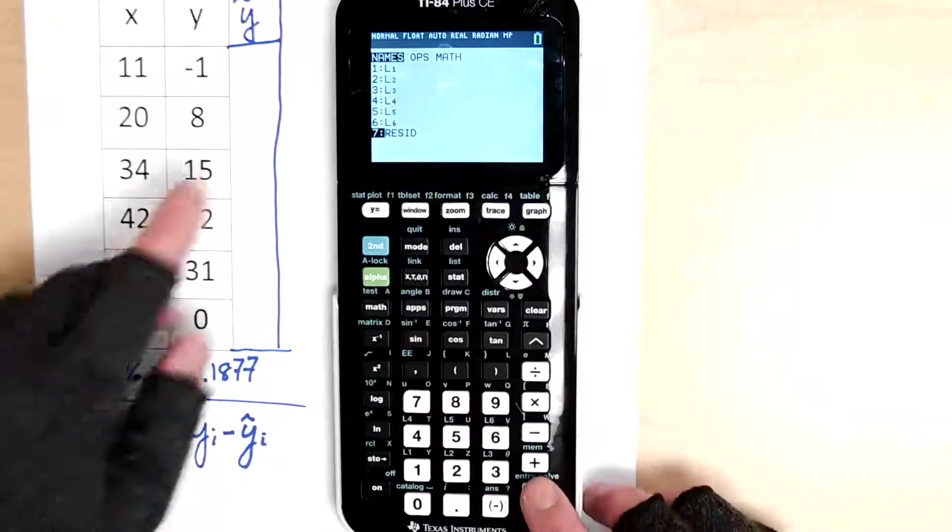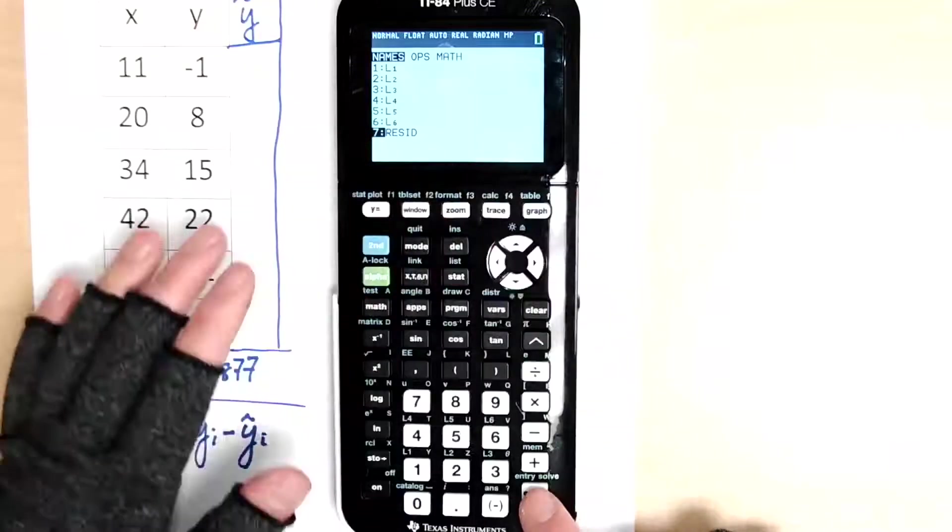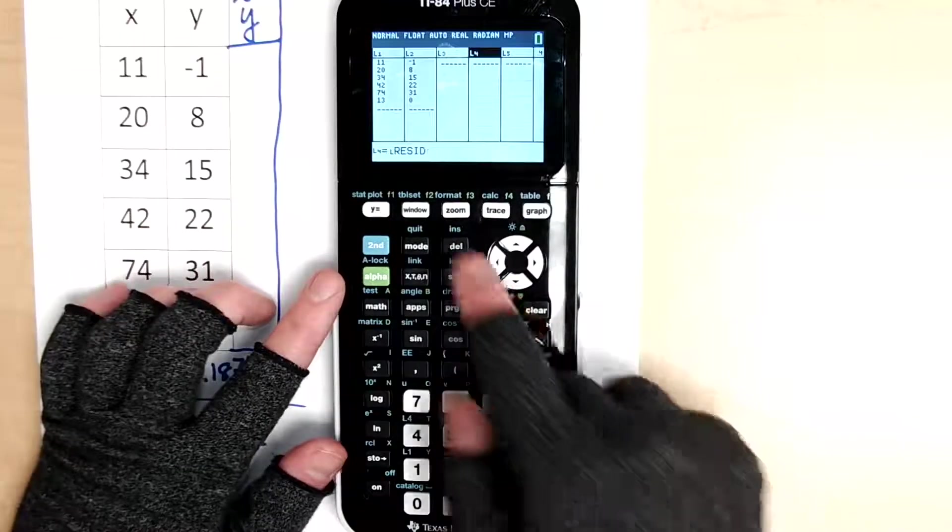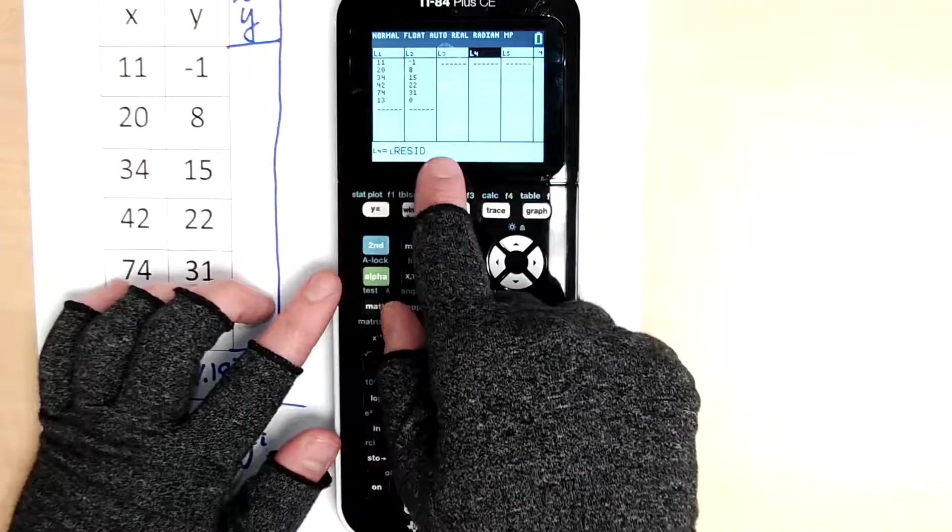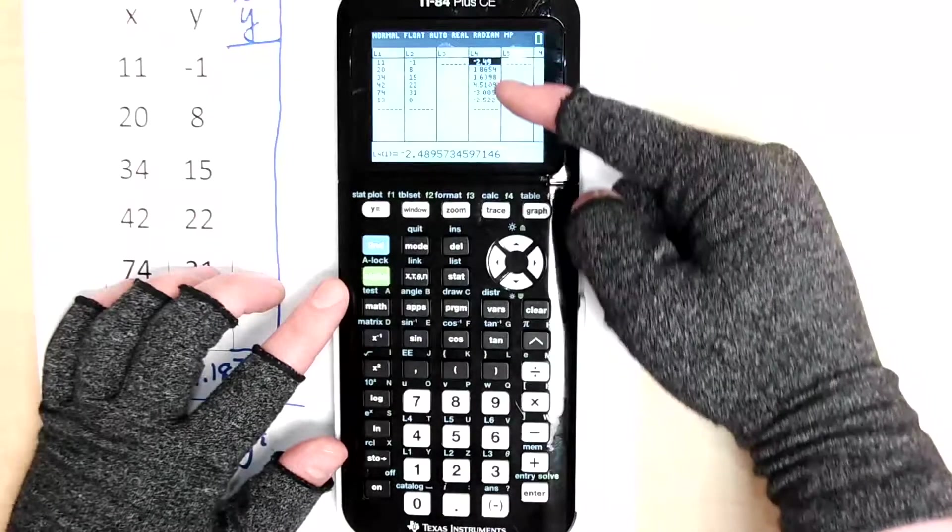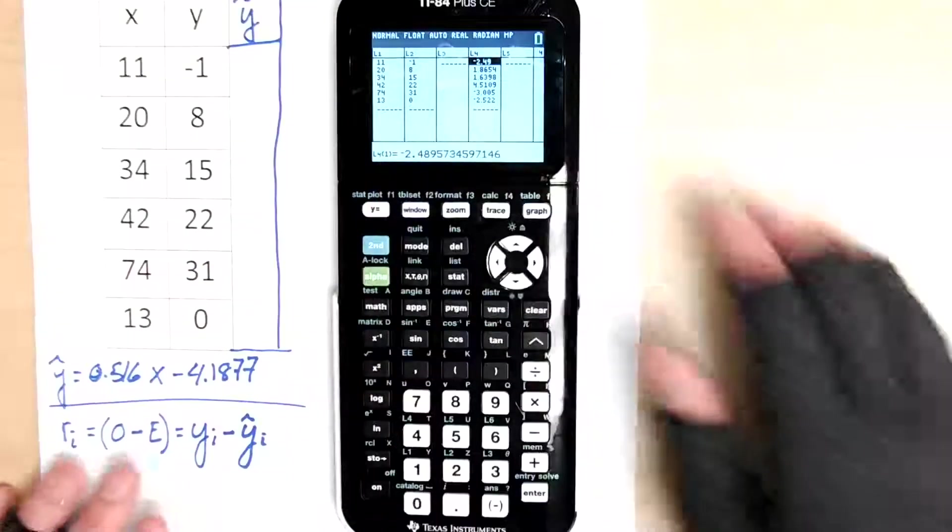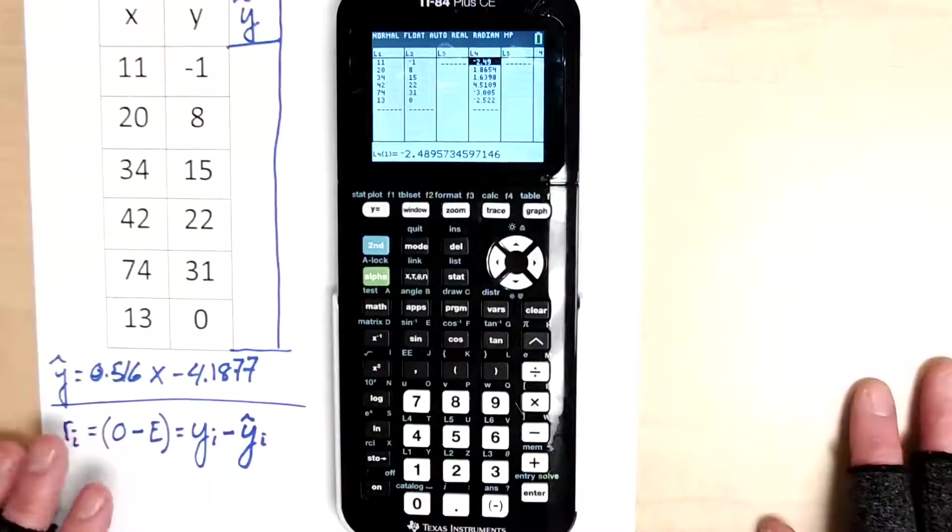And so seven says, hey, you want residuals. If you're in the home screen, you can just get this and it'll give you a list of the residuals. But if we do this, L4 is equal to the residuals. And I hit enter, it knows, hey, these are the residuals that you were looking for. And we can go through manually and we can double check that these actually do.